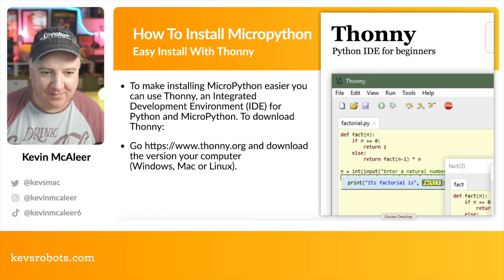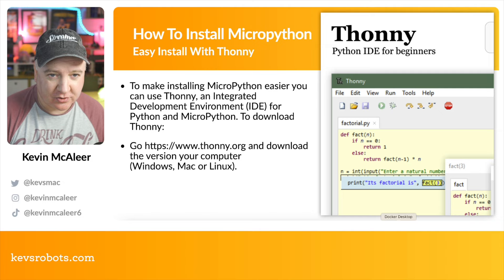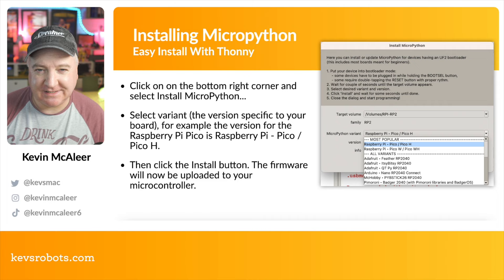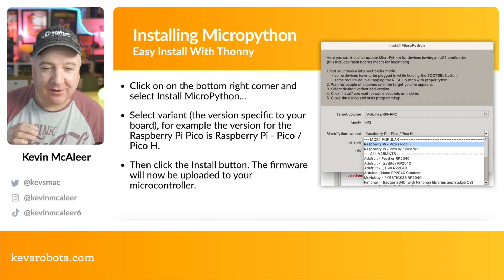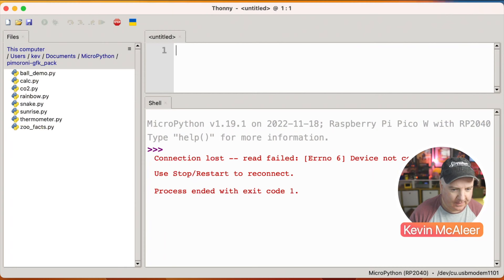There are a couple of ways to install MicroPython. We could do it from the command line, but that's a bit over the top from a skills point of view. The easiest way is to use Thonny. Thonny is available for Windows, Mac, and Linux. Go to thonny.org, download and open Thonny, and then we can install MicroPython. It's designed to be as easy as possible — click the bottom-right corner of the Thonny window, which opens a dialog box, then click the Install button.